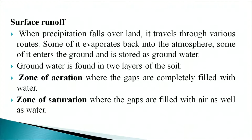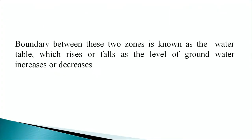When precipitation falls over land, it travels through various routes. Some of it evaporates back into the atmosphere, and some enters the ground and is stored as groundwater. Groundwater is found in two layers of the soil: the zone of aeration, where the gaps are completely filled with water, and the zone of saturation, where the gaps are filled with air as well as water. The boundary between these two zones is known as the water table, which rises or falls as the level of groundwater increases or decreases.